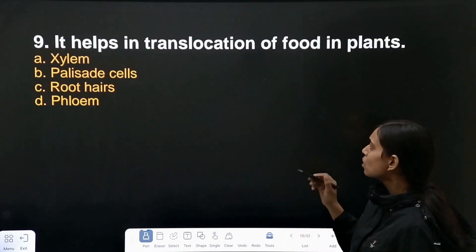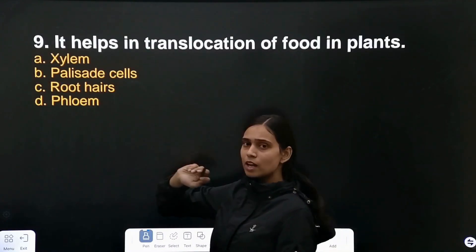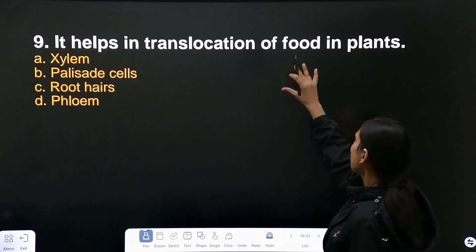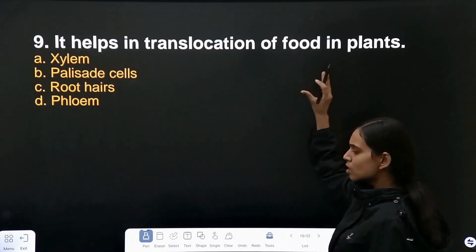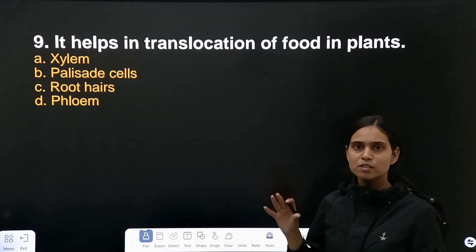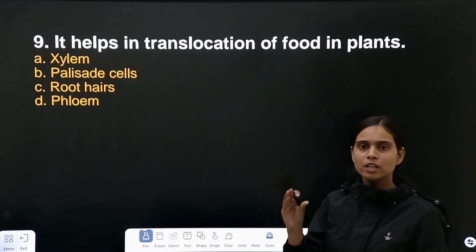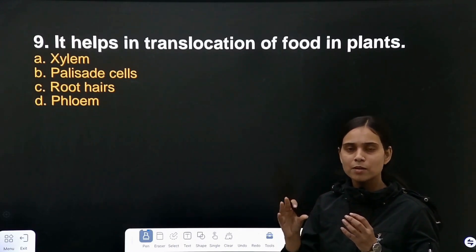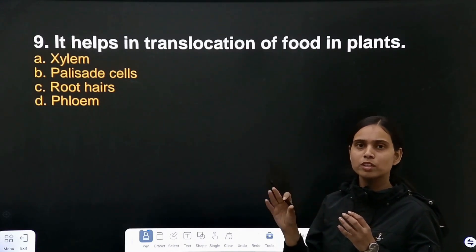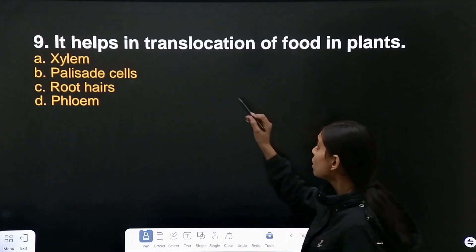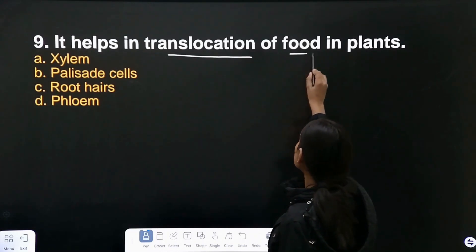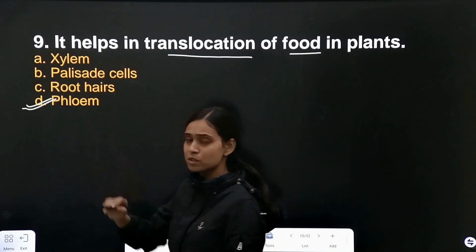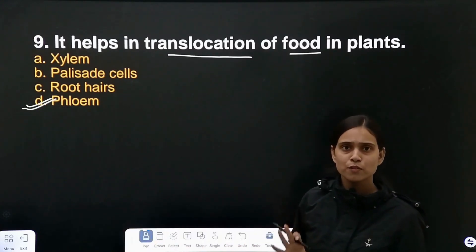Question number 9: what helps in translocation of food in plants? We have studied that water is transported through xylem and food is transported through phloem. So the transportation of food in plants takes place via phloem. The correct answer is phloem.